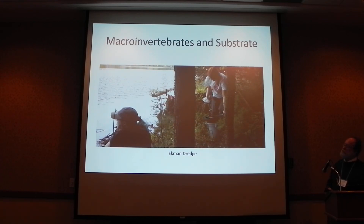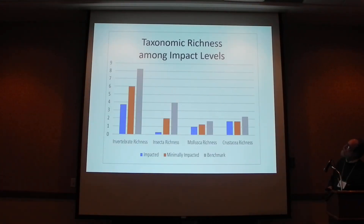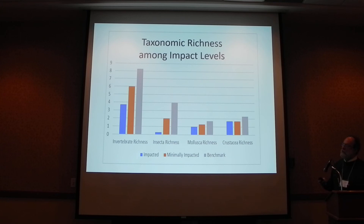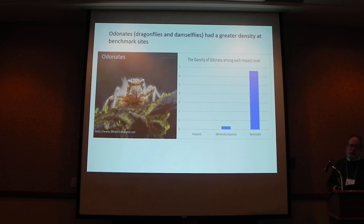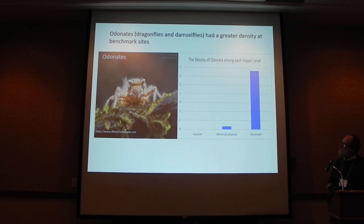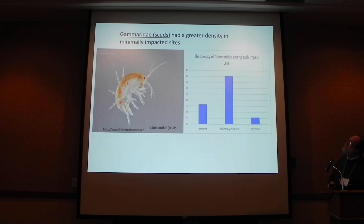One student looked at invertebrates in the substrate using an Ekman Dredge with nine-plus samples per site. Overall invertebrate richness was higher at the benchmark reference sites compared to impacted and minimally impacted sites. However, it wasn't the same for all species. Odonates were much higher in density at the benchmark and minimally impacted sites and were essentially non-existent at impacted sites. In contrast, Gammarids had greater density at the minimally impacted sites compared to the benchmark and impacted sites.